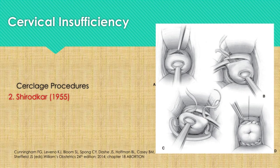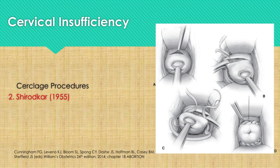For the Shirodkar procedure or modified Shirodkar cerclage, a transverse incision is made in the mucosa overlying the anterior cervix and the bladder is pushed cephalad. A 5 mm mersilene tape on a swaged-on Mayo needle is passed anteriorly to posteriorly, then directed posteriorly to anteriorly on the other side of the cervix. Allis clamps are placed so as not to bunch the cervical tissue, which diminishes the distance the needle must travel submucosally and aids tape placement. The tape is snugly tied anteriorly after ensuring all slack has been taken up, and the cervical mucosa is then closed with continuous stitches of chromic suture to bury the anterior knot.